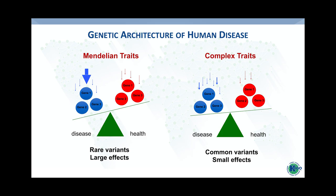On the other end of the spectrum, there are complex traits that are determined by a combination of multiple risk alleles, and the cumulative effect of these risk alleles expresses itself as a disease. That is the model that is being used to develop polygenic risk scores.